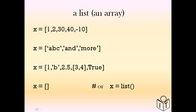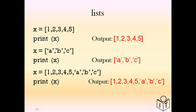An empty list is declared using either empty square brackets or using the word 'list' with round brackets following it. We can just print the list. Notice in the output we have the square brackets, which is important — that tells you it's a list.